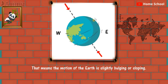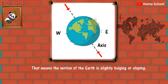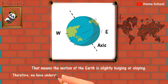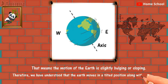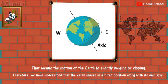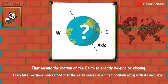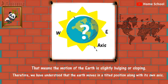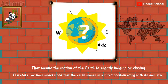line in the middle of the Earth, then this line is called the axis. So the Earth rotates along this axis. Therefore, we have understood that the Earth moves in a tilted position along its own axis. But what role does it play in causing day and night? Come, let's know about it.